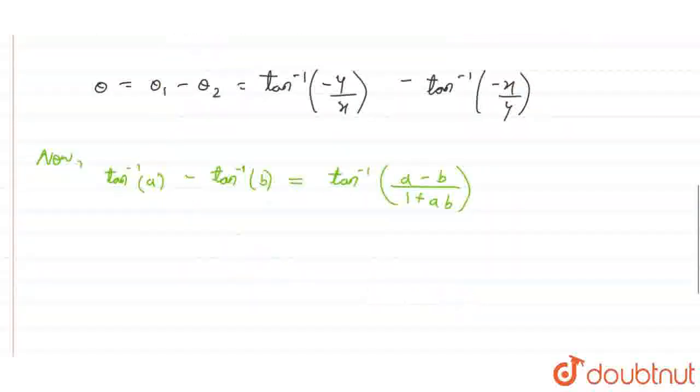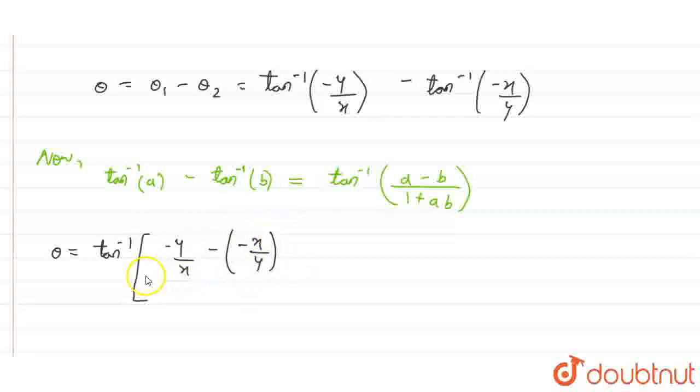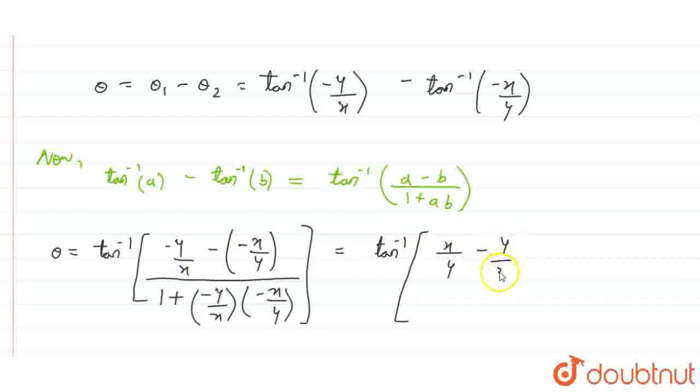We will further solve theta by applying this property. We get tan inverse of minus y by x minus minus x by y upon 1 plus minus y by x into minus x by y. This can be converted as x by y minus y by x in the numerator. In the denominator, minus and minus becomes plus, and x and y terms cancel out, leaving 1.